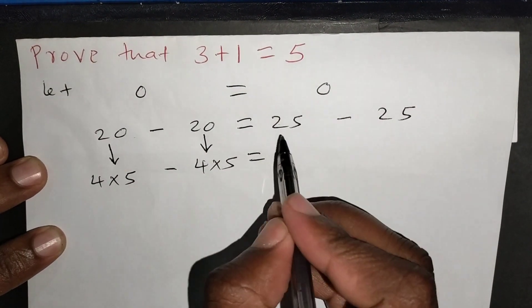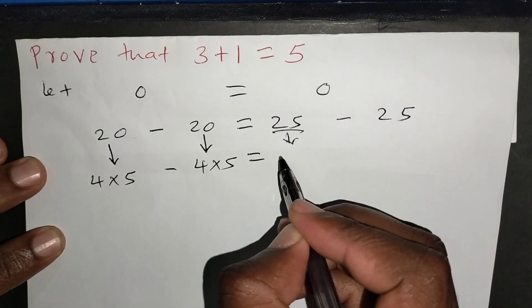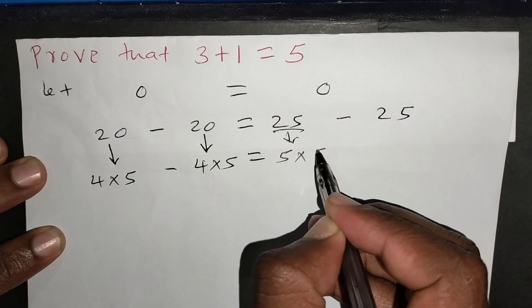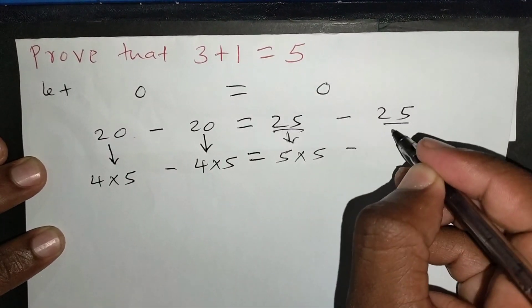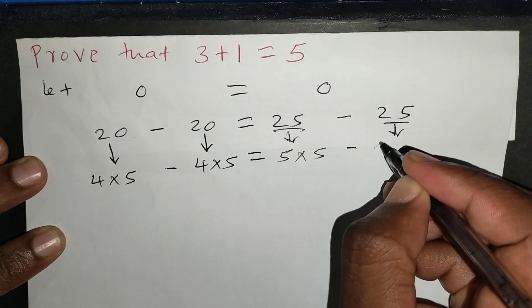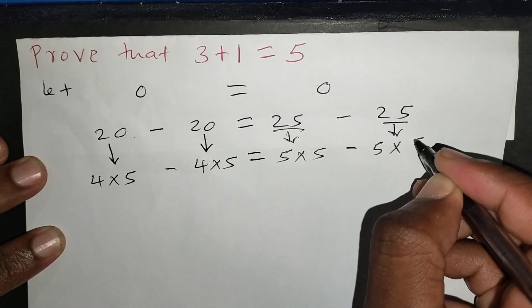Which is equal to, now 25 can be expressed as 5 multiplied by 5. Then minus, 25 can as well be expressed as 5 multiplied by 5.